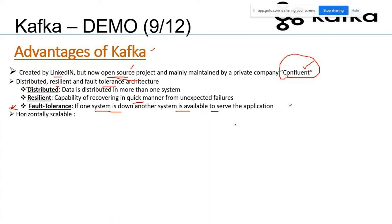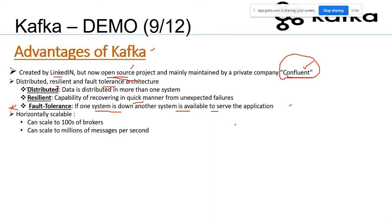Kafka is horizontally scalable. You can start with a one-node cluster and keep increasing as your business grows — three nodes, ten nodes, a thousand nodes — there is no limit. We can scale up to hundreds of brokers; a broker is simply a Kafka server. Kafka can scale to millions of messages per second. For example, Uber uses Kafka exclusively and processes 7 trillion messages per day in 24 hours.